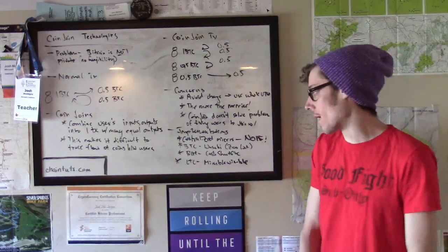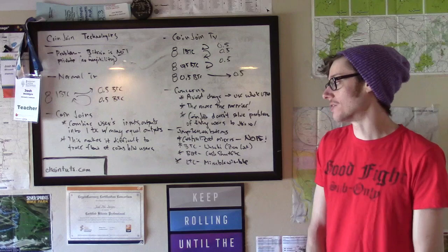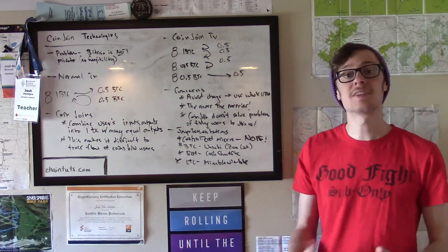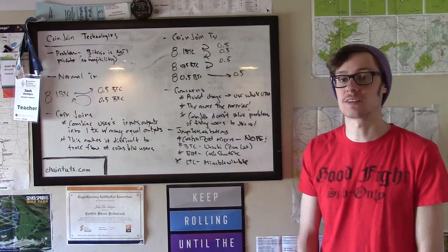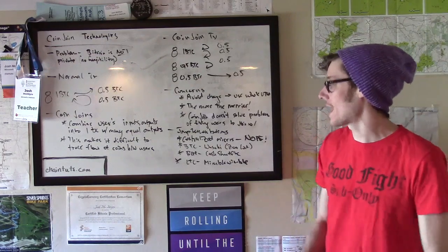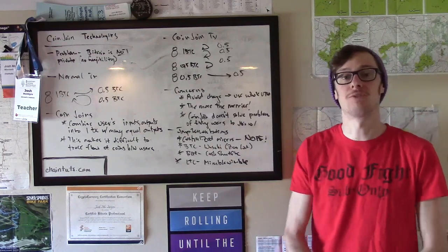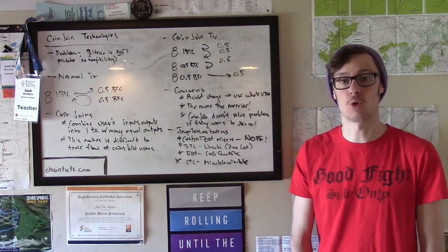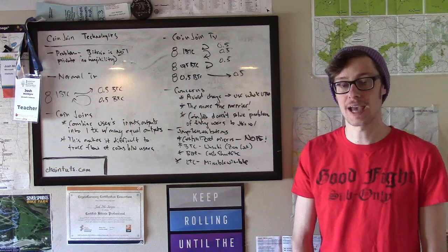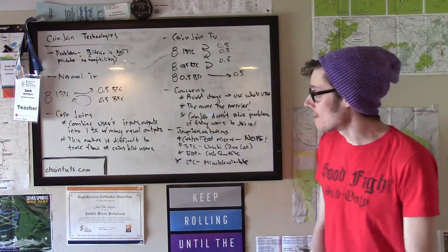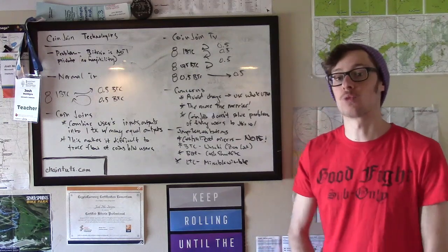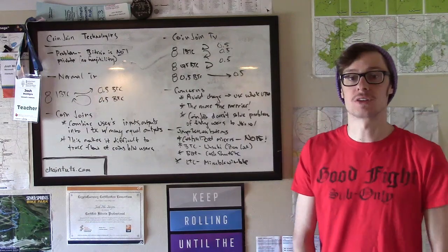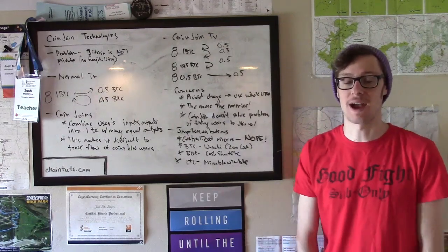On BTC Bitcoin, the Wasabi wallet uses its zero link protocol for CoinJoin, and this is a decentralized and trustless algorithm. Bitcoin Cash now uses the Cash Shuffle algorithm, which is integrated into several wallets like Electron Cash and others. Finally, the Litecoin community is working on a CoinJoin implementation called MimbleWimble, which is a very exciting development for that community.